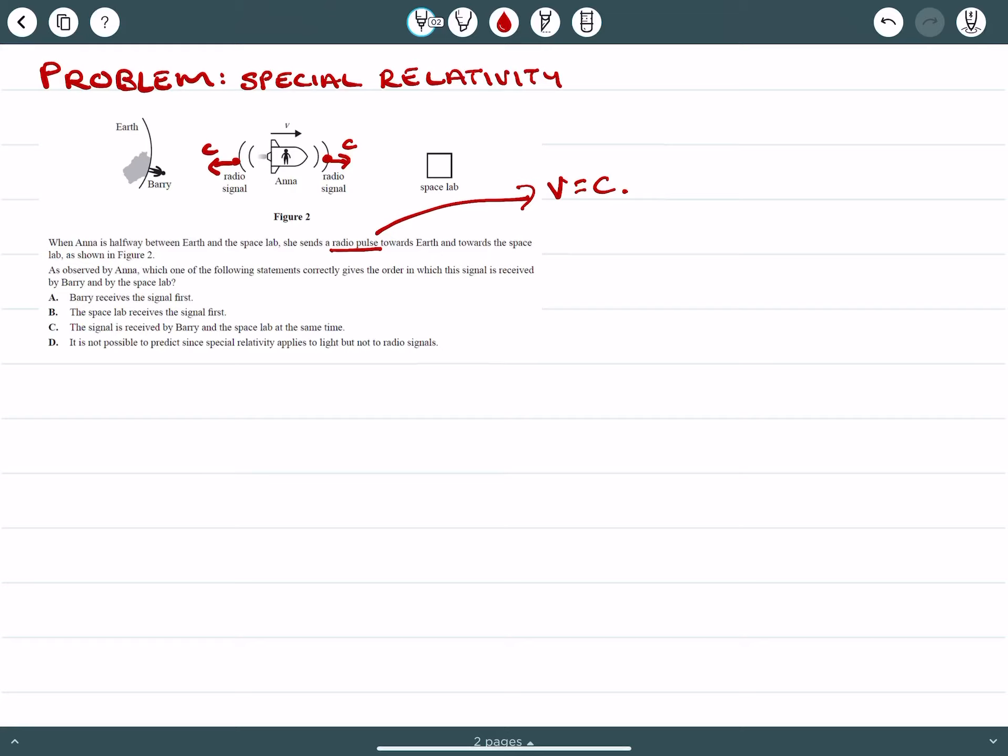Given that, we would think that, okay, while she's at the halfway point, the signal will be received by Barry and the space lab at the same time. Now, that may be true if we're not considering that Anna is moving at a set velocity.